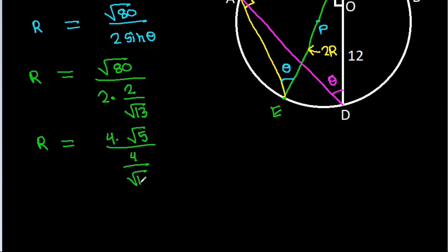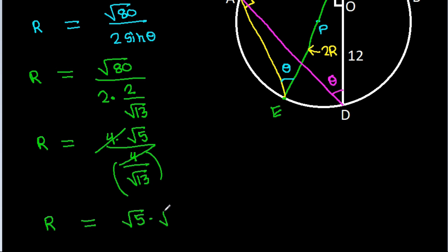After cancellation, R equals square root of 5 times square root of 13, which equals square root of 65.